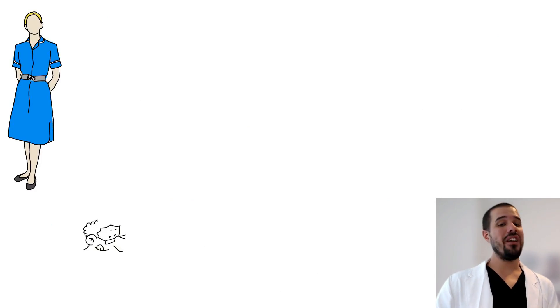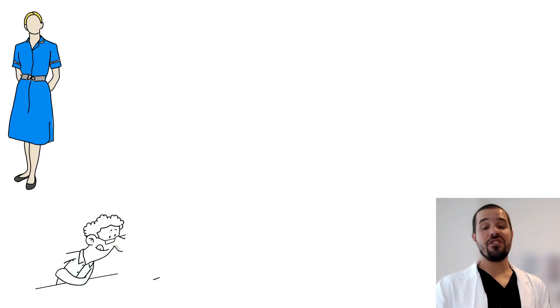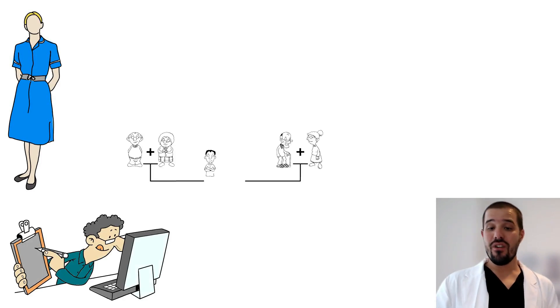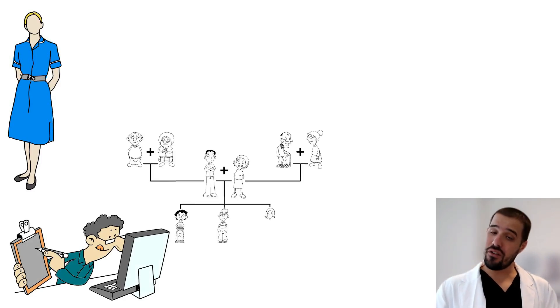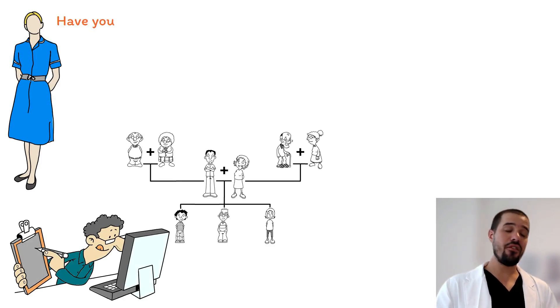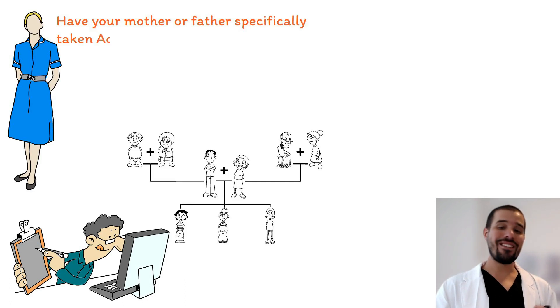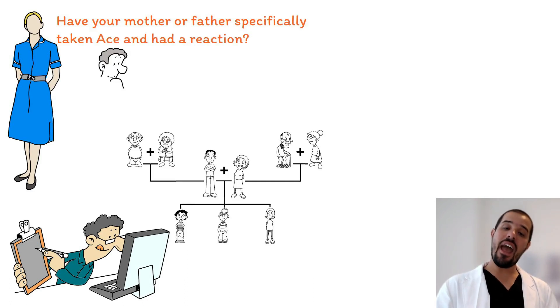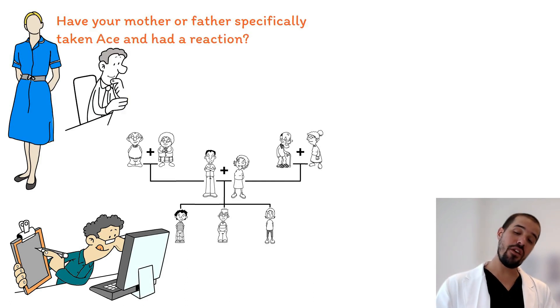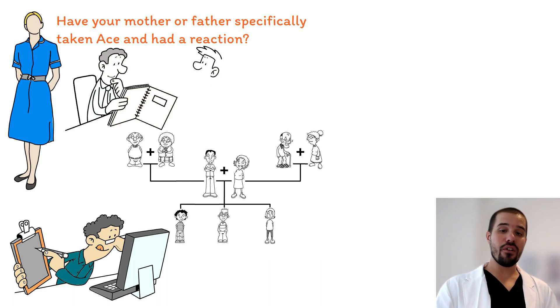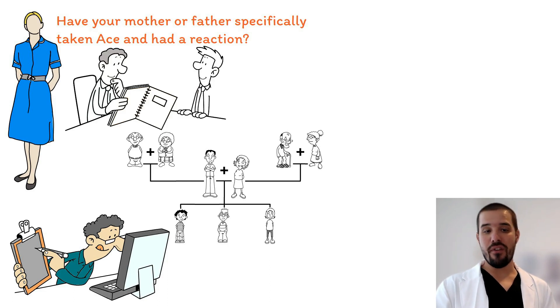As a nurse, you need to assess the patient's history specifically related to ACE inhibitors, and also familial history — has the patient's mother or father taken an ACE inhibitor and had a reaction? If they have, this is information that must be reported to the medical provider.